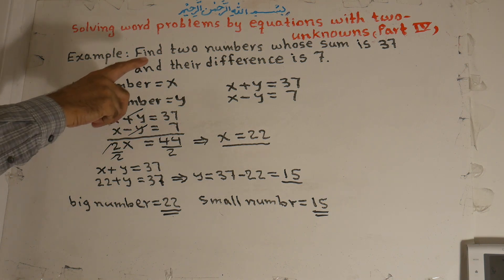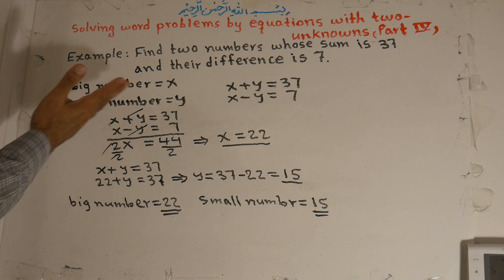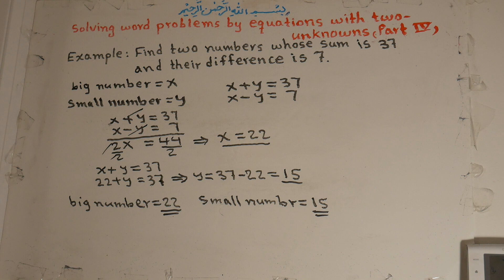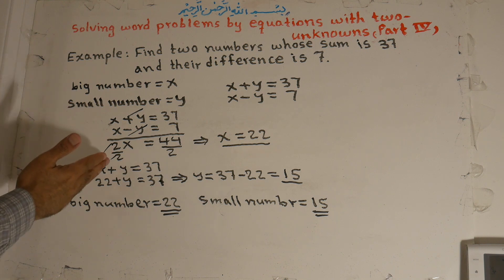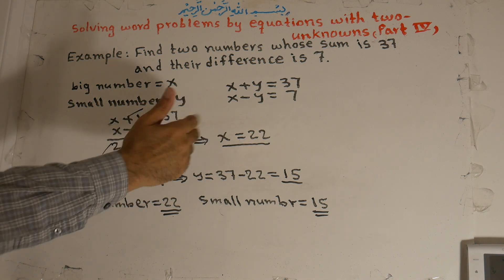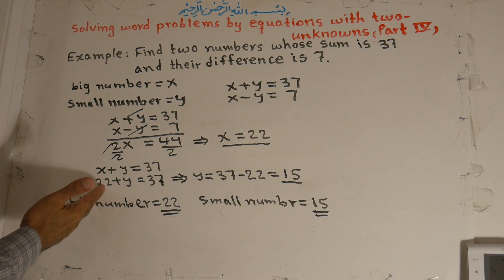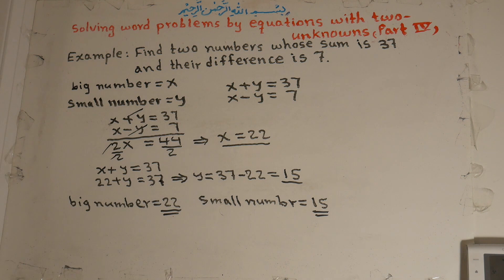Let me repeat: find two numbers whose sum is 37 and their difference is 7. We assign names: big number is x, small number is y. So x plus y equals 37 and x minus y equals 7. We add the two equations — positive y cancels negative y — giving 2x equals 44, so x equals 22. Plugging into the first equation: 22 plus y equals 37, so y equals 37 minus 22, which is 15. The big number is 22 and the small number is 15.